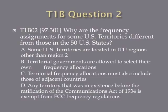Question 2. Why are the frequency assignments for some U.S. territories different from those in the 50 U.S. states? A. Some U.S. territories are located in ITU regions other than Region 2. B. Territorial governments are allowed to select their own frequency allocations. C. Territorial frequency allocations must also include those of adjacent countries. Or D. Any territory that was in existence before ratification of the Communications Act of 1934 is exempt from FCC frequency regulations.